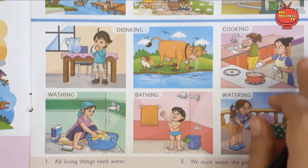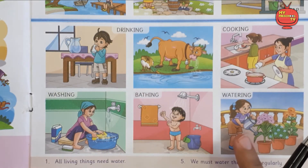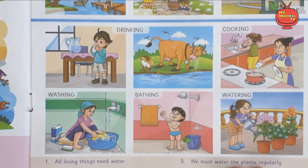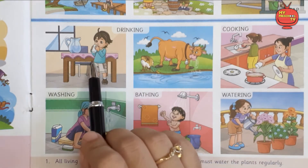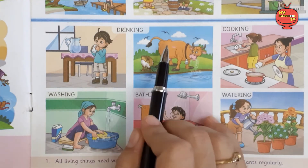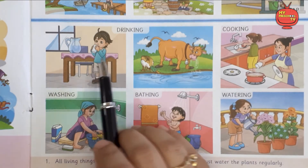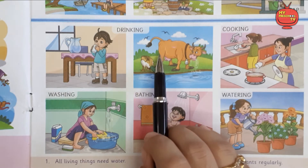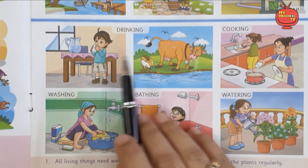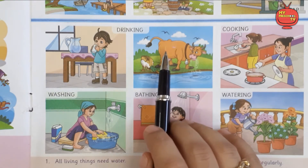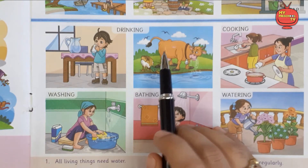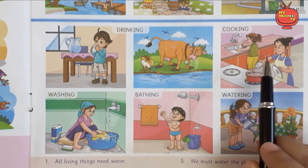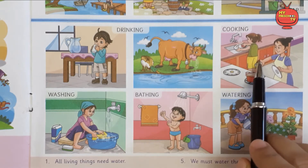Now let's see what are the uses of water. Water is needed in almost all the household works we do. Drinking — water is used mainly for drinking. Human beings and even animals need water to drink. Without water we could not survive, so all living things need water.